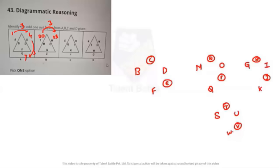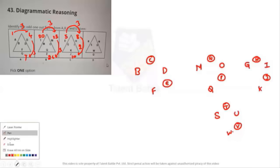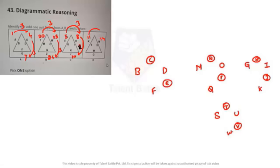T is 20, W is 23 — common difference of 3. Z is 26 — common difference of 3. E is 5, H is 8 — common difference of 3. But J is 10: from H (8) to J (10) the difference is only 2, not 3. Everywhere else the common difference is 3, so C is the odd one out.